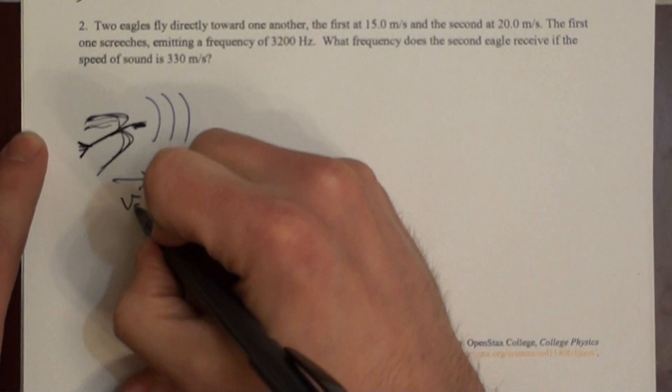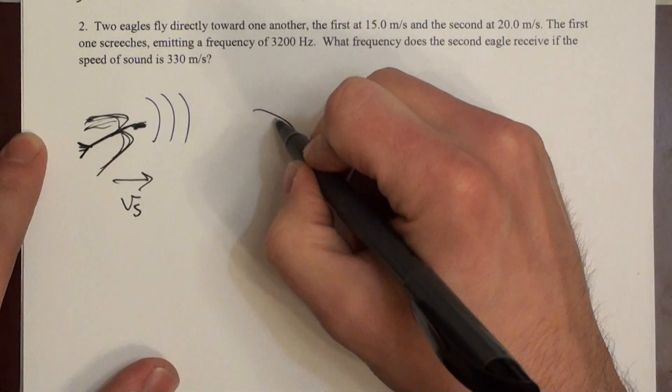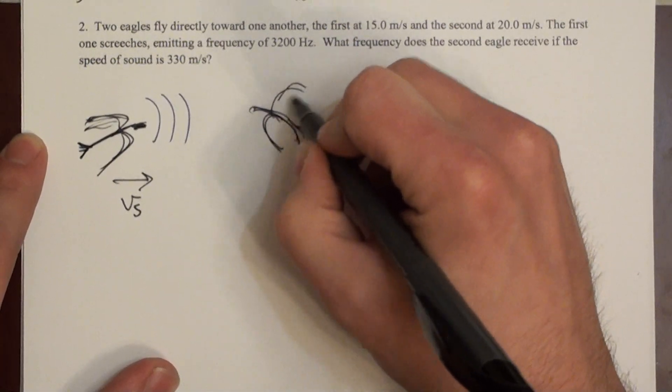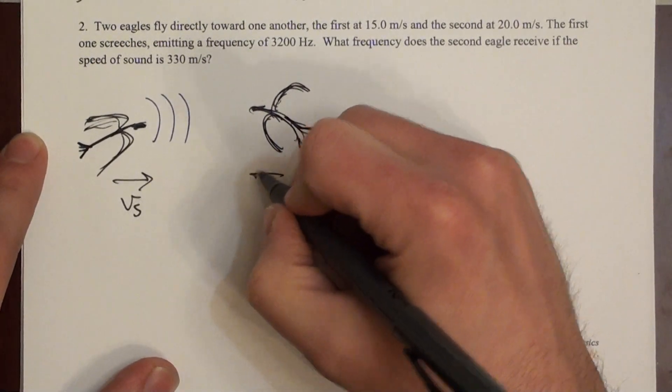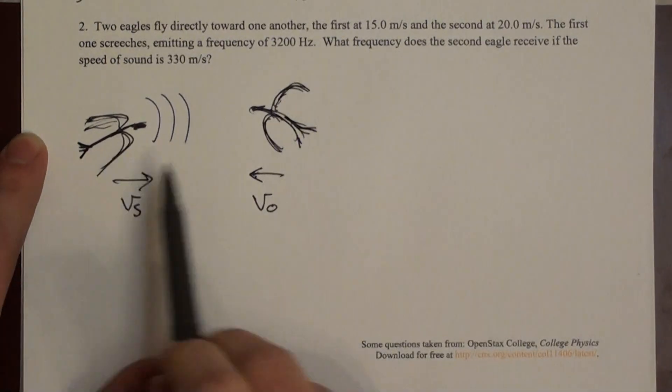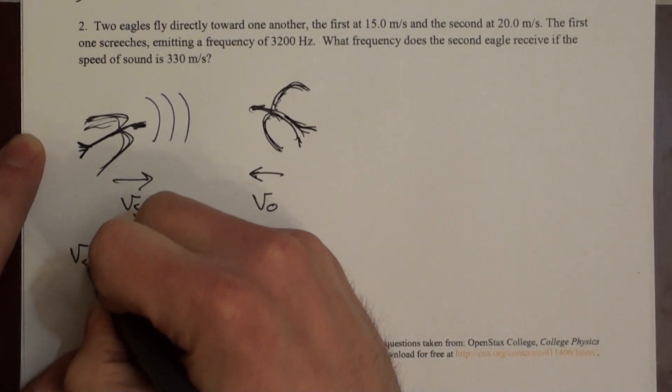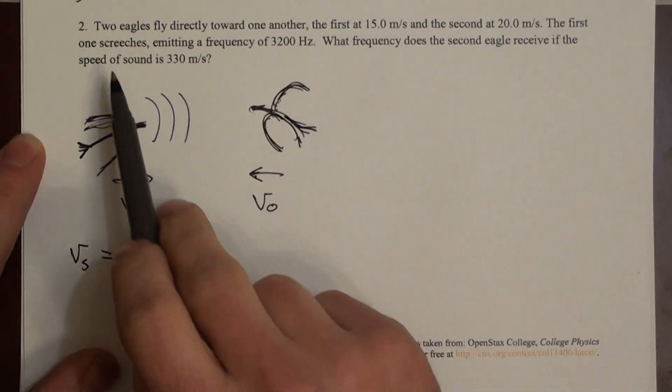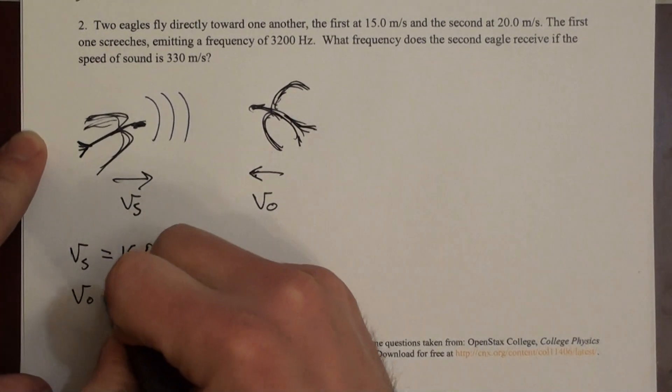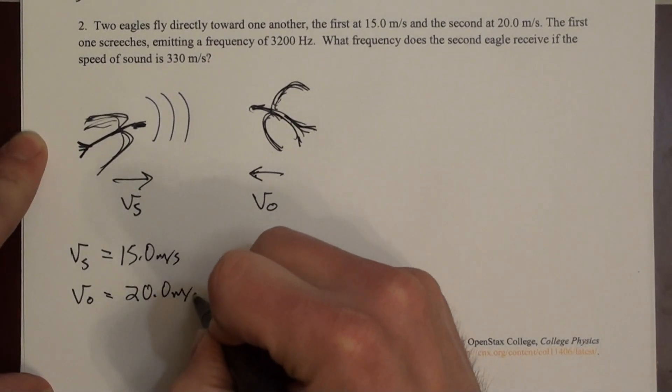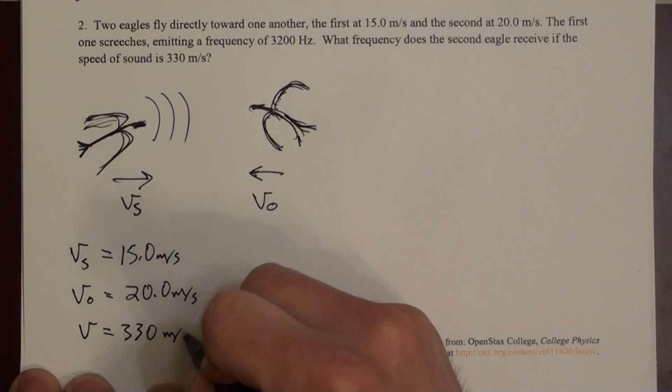So this speed for this eagle is the speed of the source, and the second eagle is flying the other direction toward the first eagle, traveling this direction. This is v of the observer. And he's receiving these wave fronts. So we can identify these variables. V for the source. We're told the first eagle is screeching. So the first eagle's velocity is 15 meters per second. The observing eagle's velocity is 20 meters per second. And the speed of sound on this particular day is 330 meters per second.